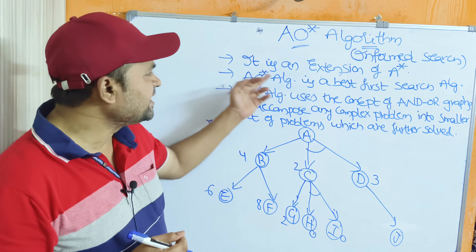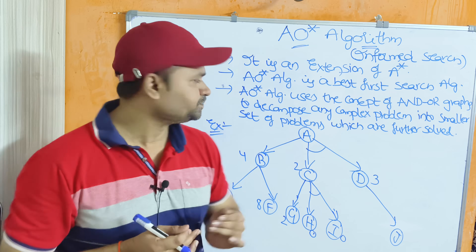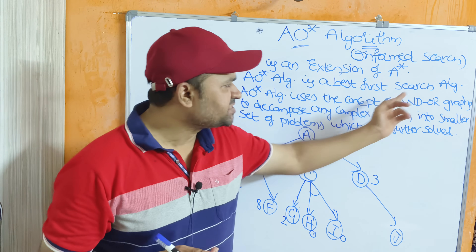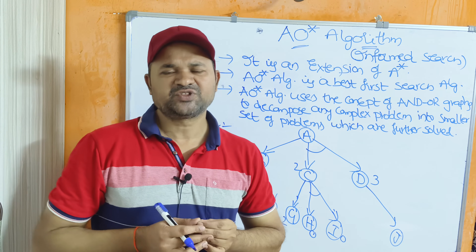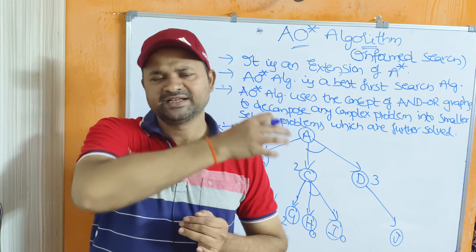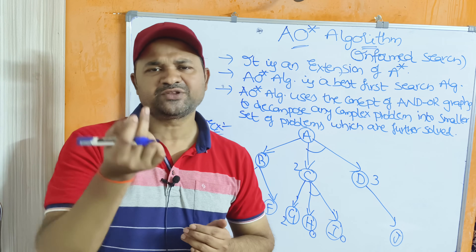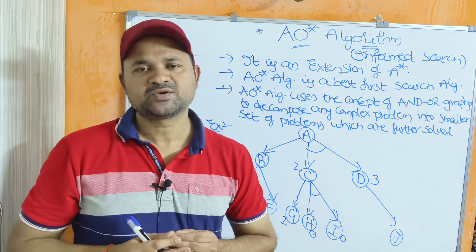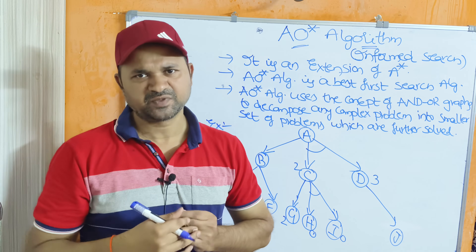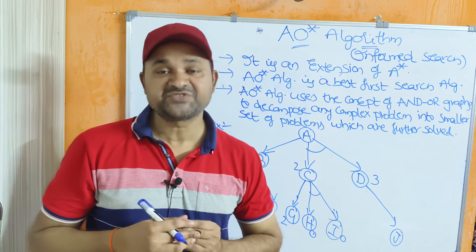AO* algorithm is an extension to A* algorithm and is a best-first search algorithm. Here we will explore and generate a set of nodes. Out of all the nodes, we are going to select the best node — the node which produces the minimum cost. That is why AO* algorithm is called a best-first search algorithm.